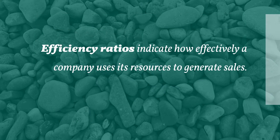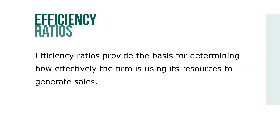Efficiency ratios indicate how effectively a company uses its resources to generate sales. A firm with $500,000 in assets producing $1 million in sales is using its resources more effectively or efficiently than a firm producing the same sales with $2 million invested in assets.